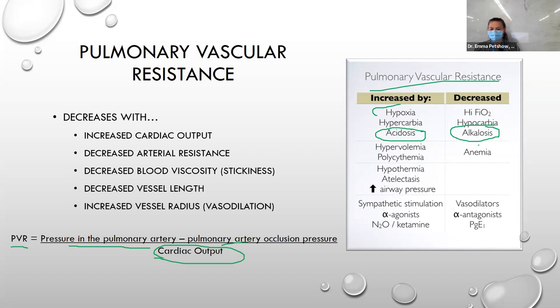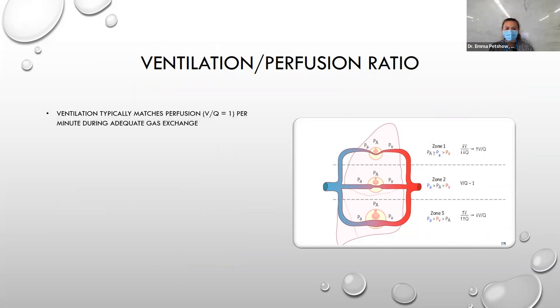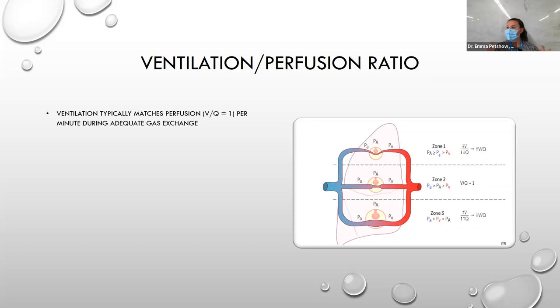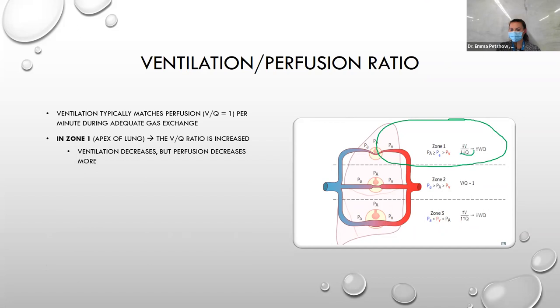Ventilation-perfusion (V/Q) ratio: ventilation (breathing in and out) should ideally match perfusion (O2 and CO2 exchange at tissues). In a healthy system, V/Q = 1 per minute. This changes by lung zone. Zone 1 (apex): both ventilation and perfusion are decreased, but perfusion decreases more than ventilation, so the V/Q ratio is increased.